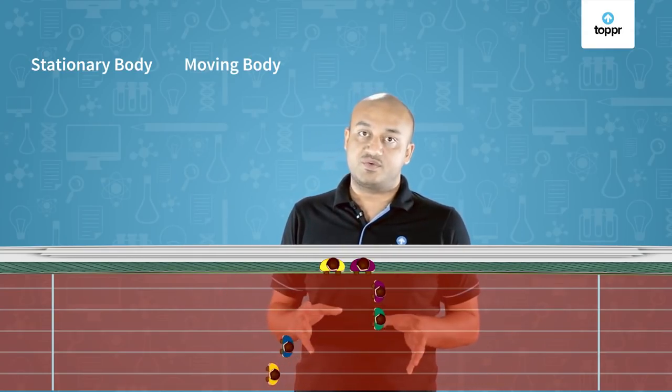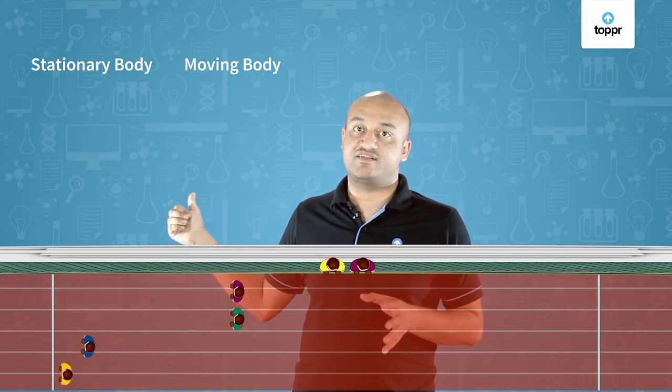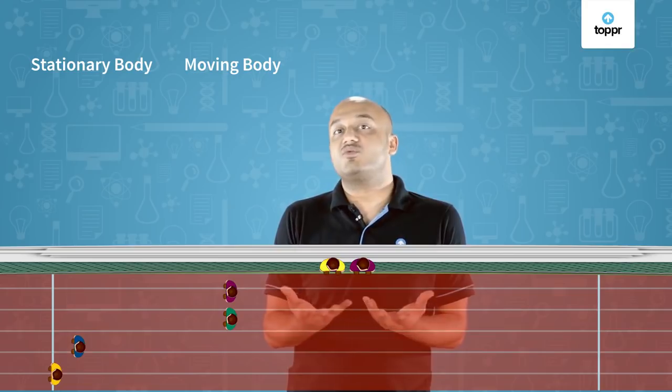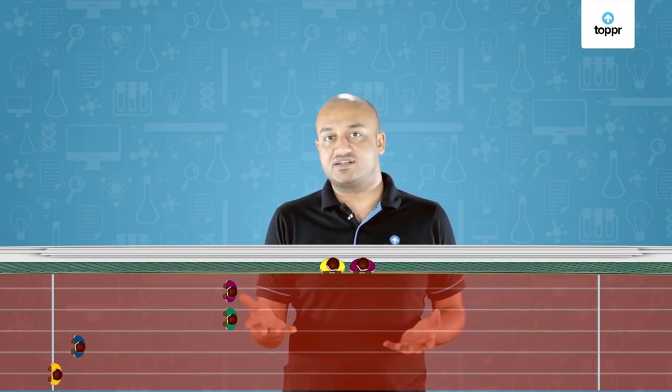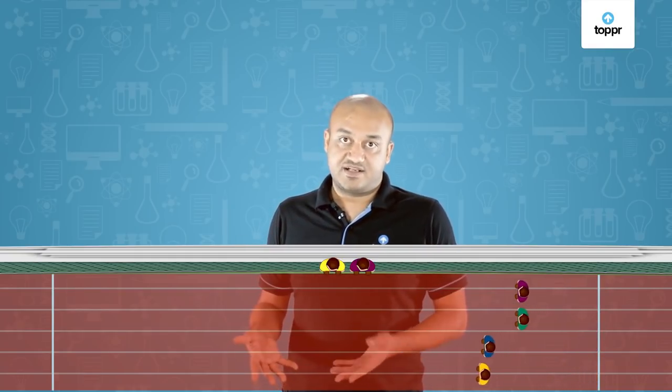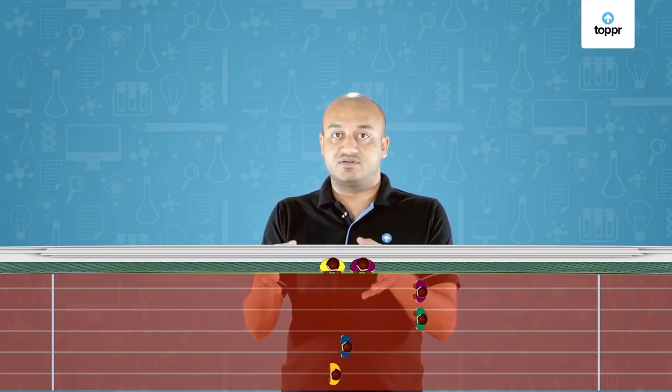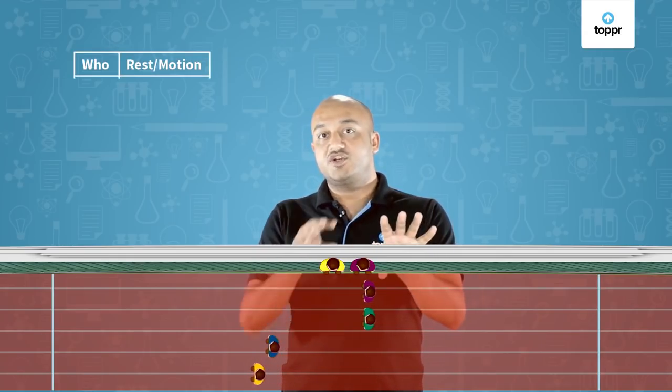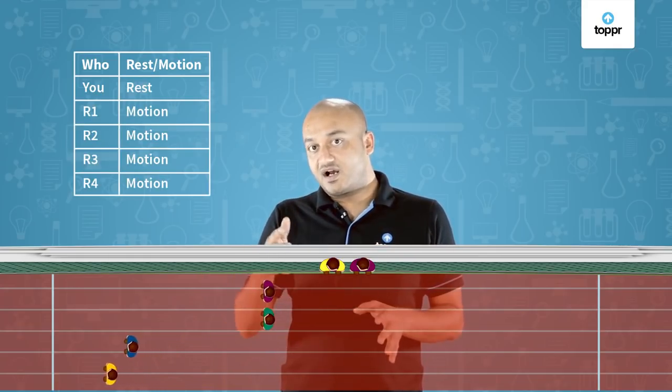What we want to do now is we want to take a stationary body as a reference point and a moving body as a reference point and try and see the motion around. So let's pick your friend who is a stationary body. This is very easy. To your friend, you are obviously at rest and all the runners are moving. Let's look at this on a table. With respect to your friend, you are at rest and all the runners are in motion.